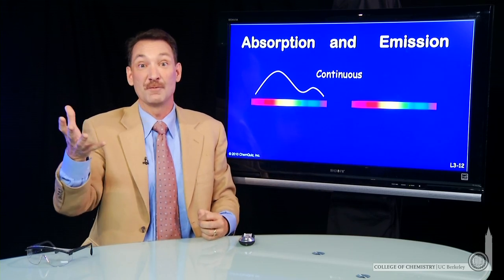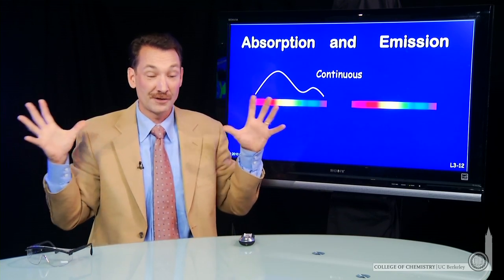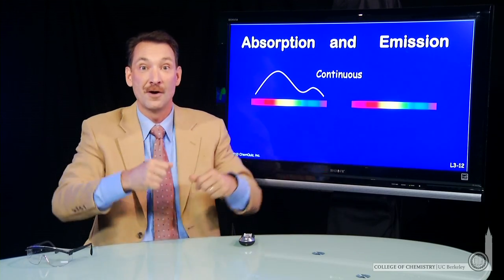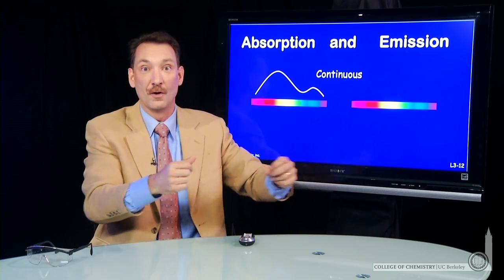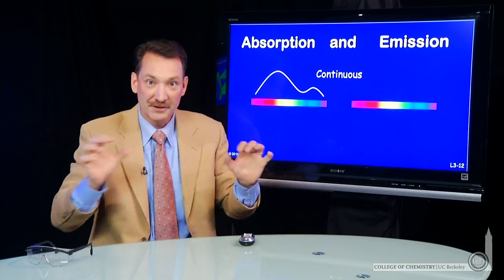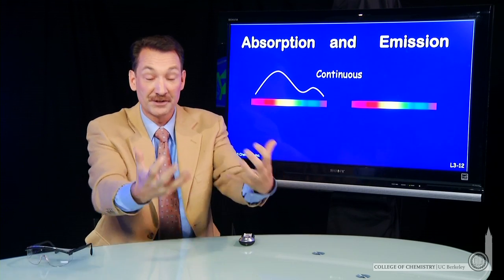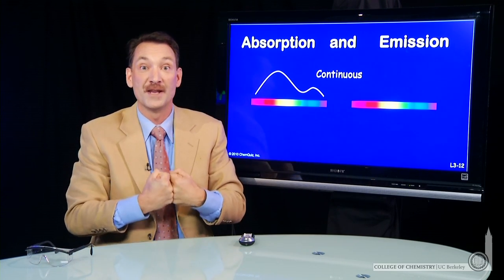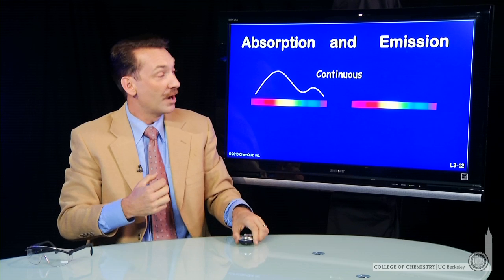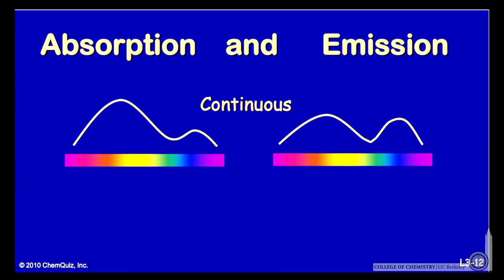For instance, when we see white light, that's all the colors mixed together coming at us. Or we can see a bluish red or yellowish orange, several different wavelengths coming at us at once, or several different wavelengths could be absorbed at once. So absorption and emission happen in continuous broad swaths of radiation.